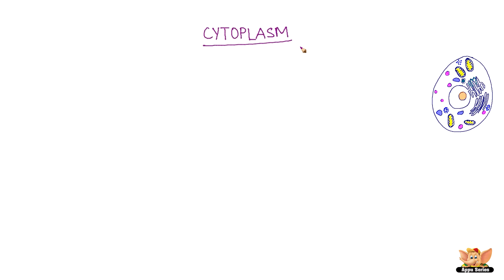Cytoplasm. The three features in almost every cell are plasma membrane, nucleus, and cytoplasm. We have already learned about plasma membrane and nucleus and their importance. Let's learn about cytoplasm.